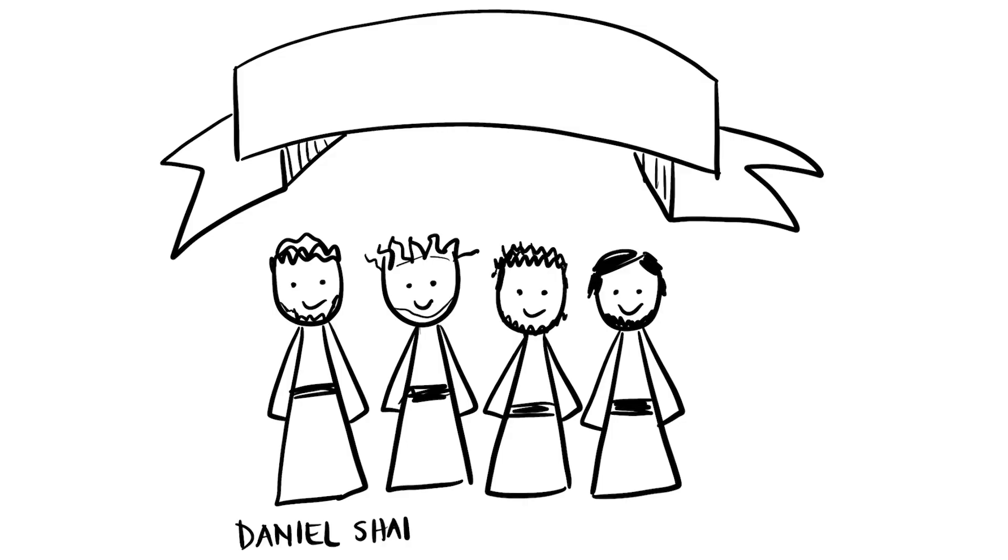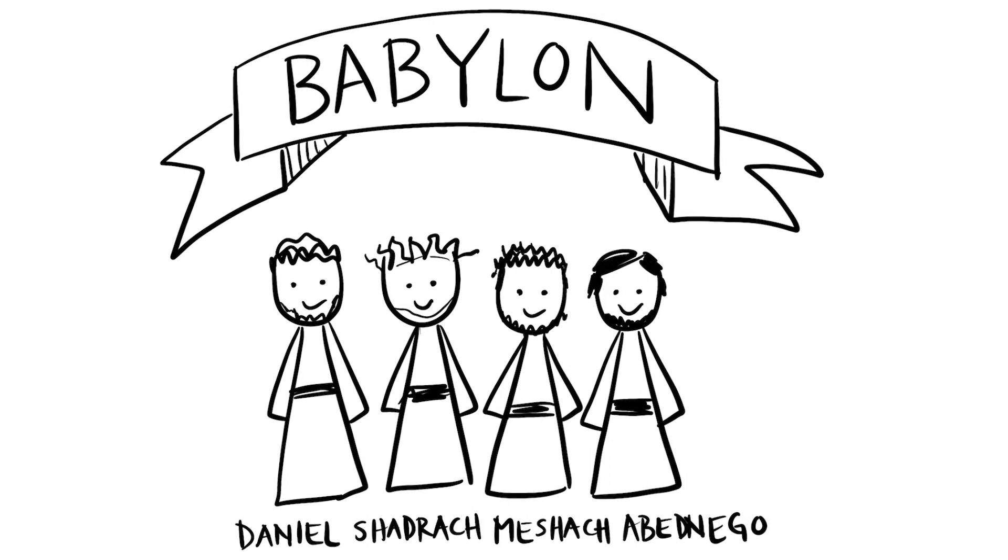Judah in the south had a few good kings. Eventually though, they gave into the same sins as Israel. So God allowed the Babylonians, an even bigger and worse nation, to defeat both the Israelites and the Assyrians. The Babylonians, led by King Nebuchadnezzar, burned the city of Jerusalem, destroyed the temple, and forced most people to move to Babylon. The Babylonians left the poorest people in the land to farm it, but they took the best and brightest Israelites, including Daniel, Shadrach, Meshach, and Abednego, and gave them leadership positions in Babylon.